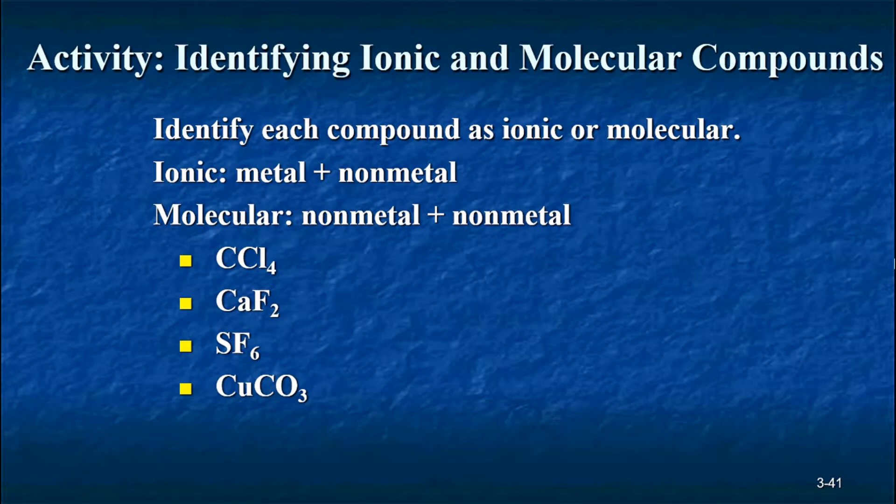Okay, CCl4, what would that be? Very good, it's molecular. Both elements C and Cl, carbon and chlorine, are non-metals. Next one, CaF2. Very good, and you should know the name of that, right? Calcium fluoride. That is ionic because calcium, one of the elements, is a metal.